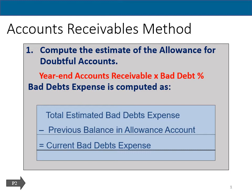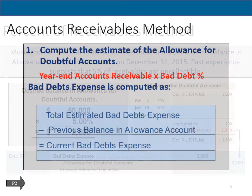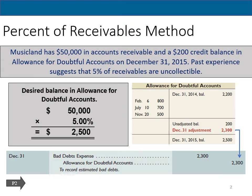When we do this, we want to keep in mind that this gives us our ending balance in the allowance for doubtful accounts — not the expense. As a visual illustration, we have to estimate and subtract out total estimated bad debts from the previous allowance balance, and that gives you the current expense. For example, Music Land has fifty thousand dollars in accounts receivable and a two hundred dollar credit balance in the allowance for doubtful accounts on December 31st, 2015. Past experience suggests that five percent of receivables are uncollectible. So we take five percent of fifty thousand and get twenty-five hundred.